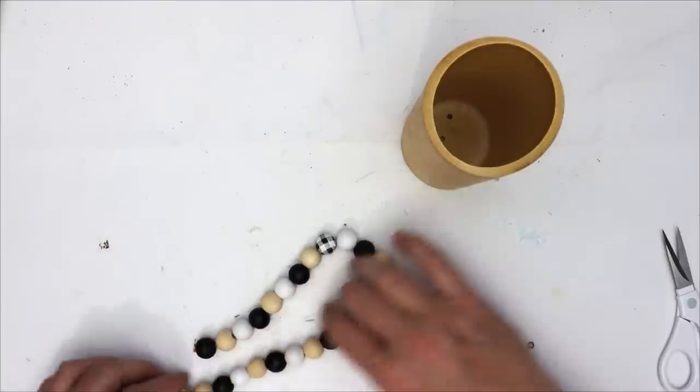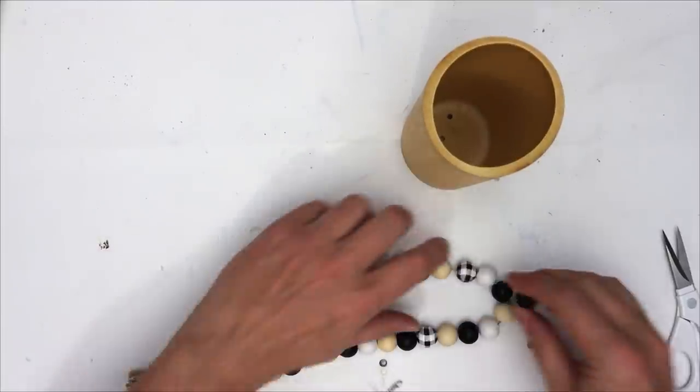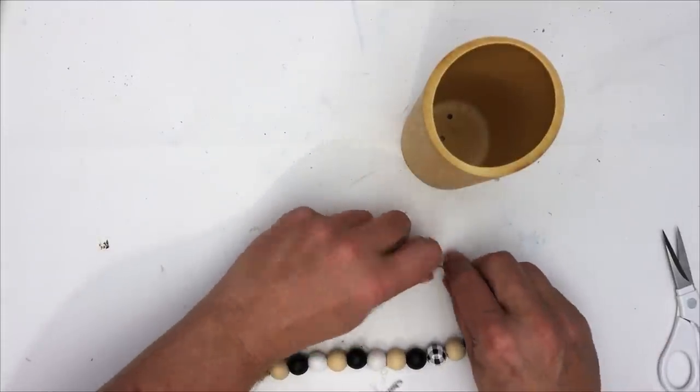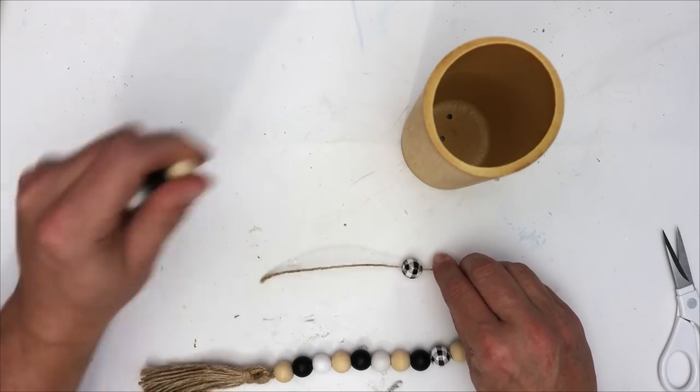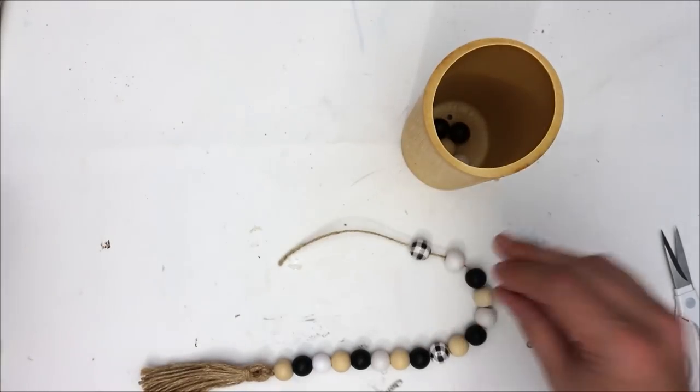So I'm going to go ahead and cut these. We're going to separate this out. I'm going to figure out how many beads I want. We're going to keep that on the strand, but I'm also going to keep that tassel.